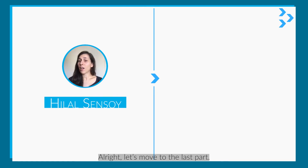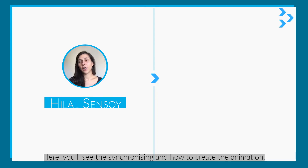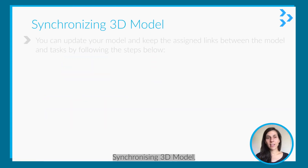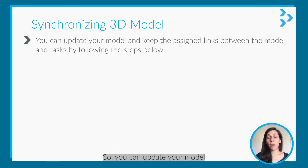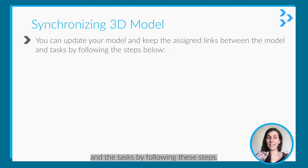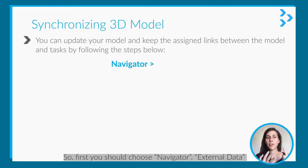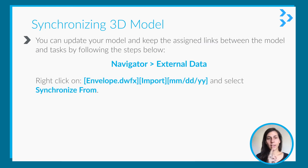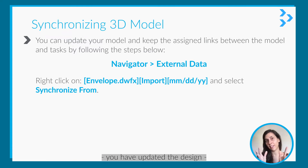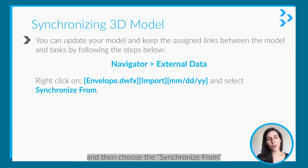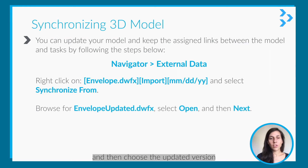Let's move to the last part — synchronizing 3D models and how to create the animation. You can update your model and keep the assigned links between the model and the task by following these steps. First, choose Navigator > External Data, then right-click. If you're importing an updated envelope design, choose that updated design, then choose Synchronize From, select the updated version, select Open, and then click the Synchronize button.